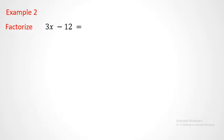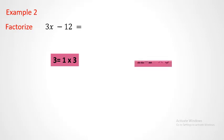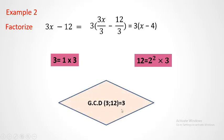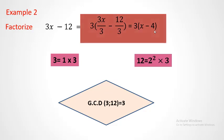Example 2: factorize 3x minus 12. The prime factorization of 3 is 1 times 3, and the prime factorization of 12 is 2 squared times 3. The common factor is 3, so GCD is 3. Take 3 outside and divide each term by 3: 3x divided by 3 is x, and 12 divided by 3 is 4. The factorized form is 3(x − 4).